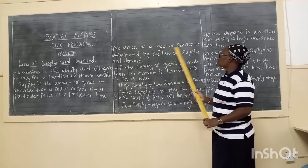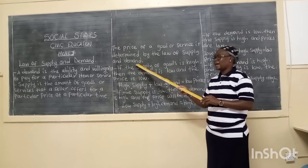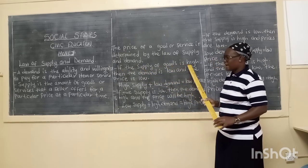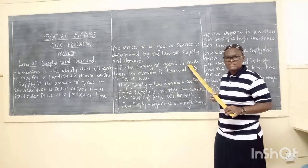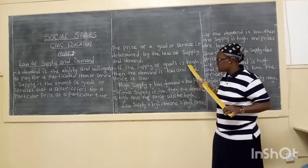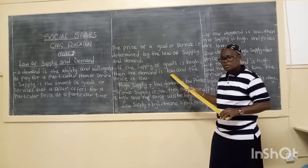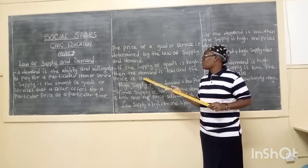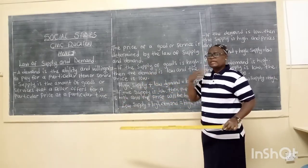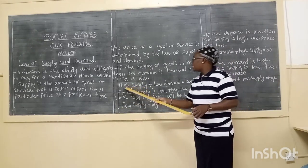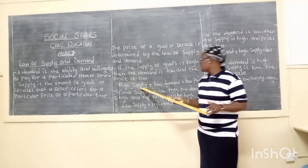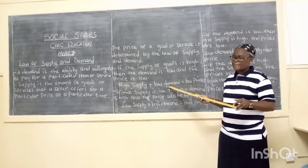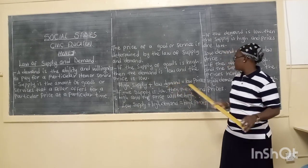The price of a good or service is determined by the law of supply and demand. If the supply of goods is high — when you have a lot of goods on the market and everyone may be selling the same type of goods, let's say tomatoes — then the demand is low and the price will be low. If there are many people selling tomatoes, everyone wants their tomatoes to be bought, so the prices will go down. High supply leads to low demand, and since there is low demand, the price will be low.